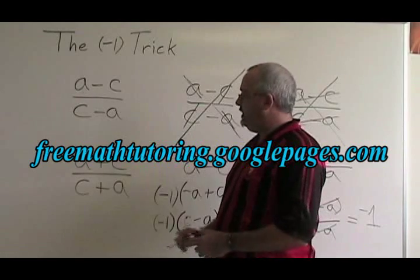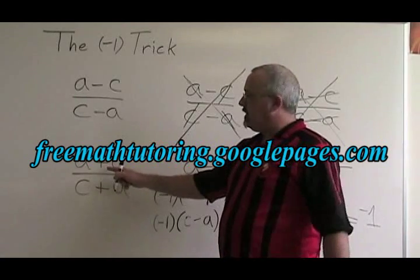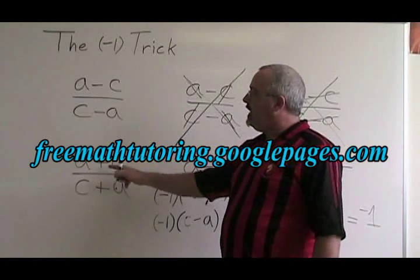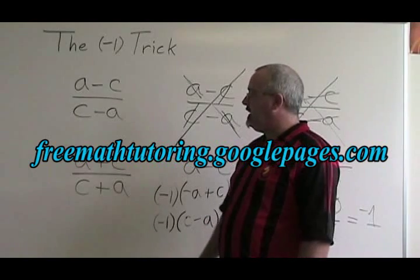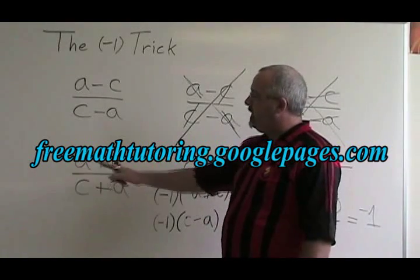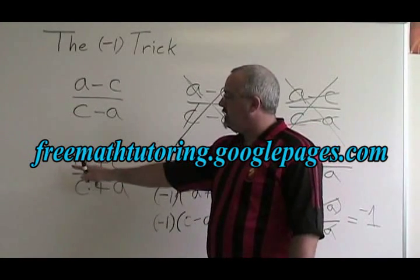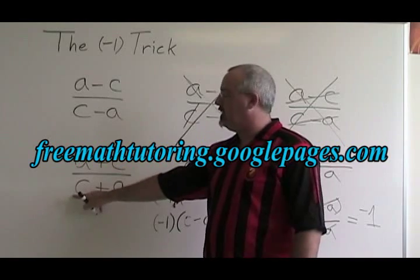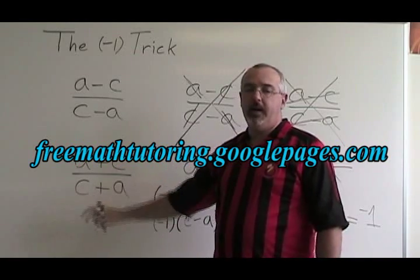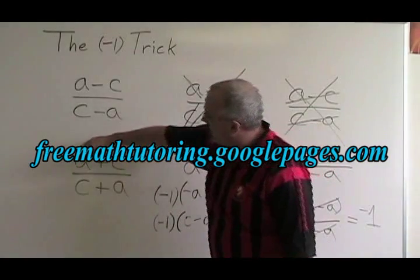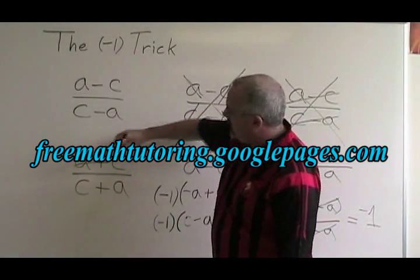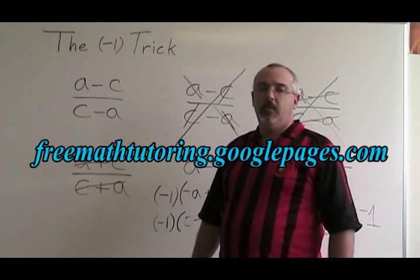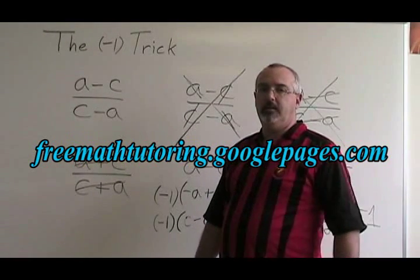One little reminder: if it's a plus sign instead of a minus sign, a plus c is the same as c plus a. This a is positive, and so is this one; this c is positive, and so is this one. So a plus c equals c plus a, and we are allowed to cancel the binomials when they're written backwards if it's a plus sign.